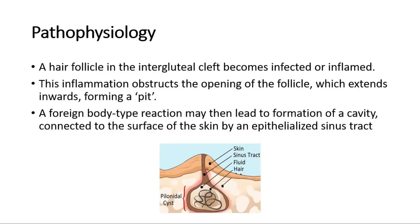For pathophysiology, pilonidal sinus disease development starts from a hair follicle in the intergluteal cleft becoming infected or inflamed. This inflammation obstructs the opening of the follicle, which extends inwards, forming a pit — a characteristic feature of pilonidal sinus disease. A foreign body type reaction may then lead to formation of a cavity connected to the surface of the skin by an epithelialized sinus tract.